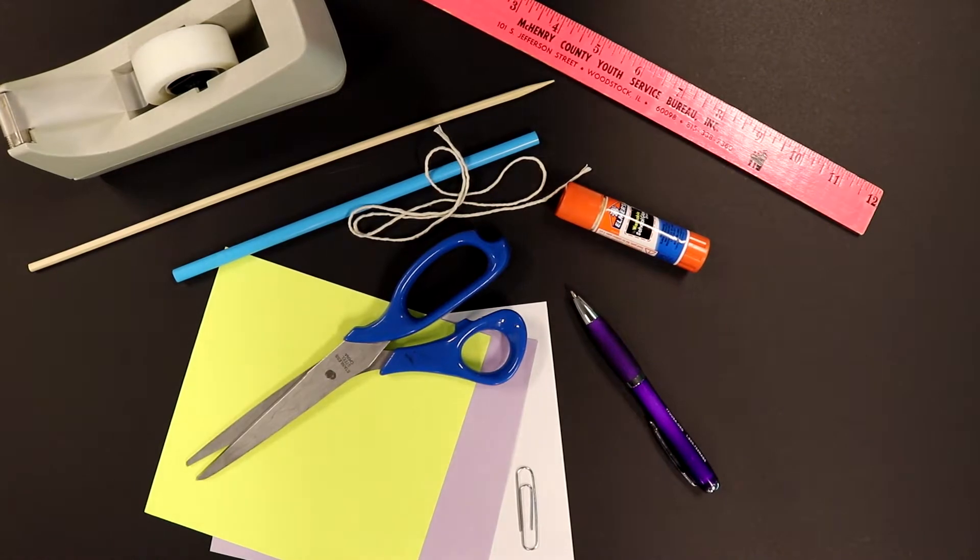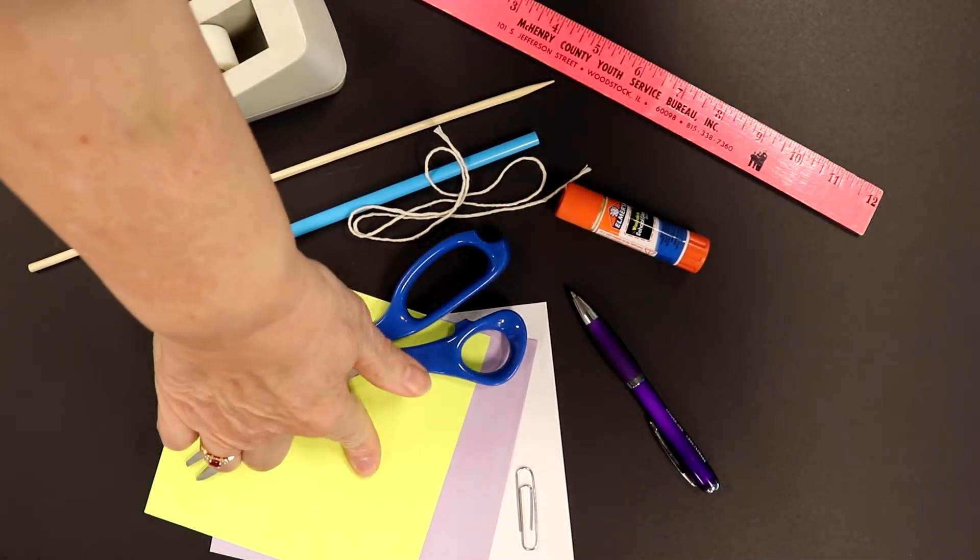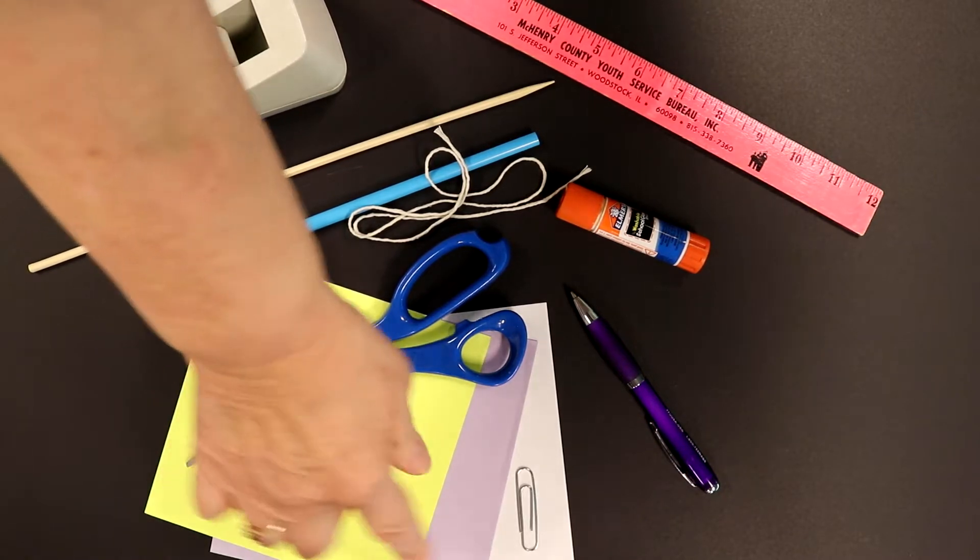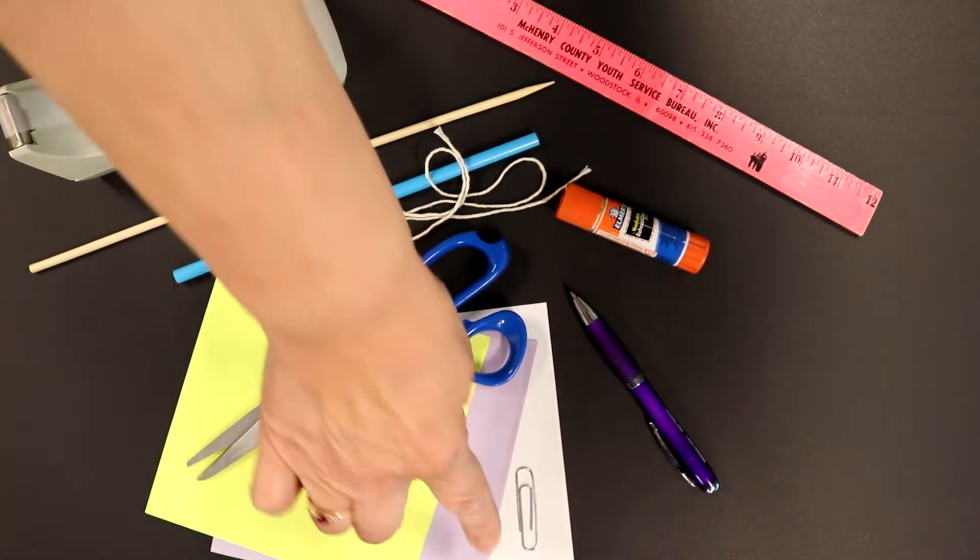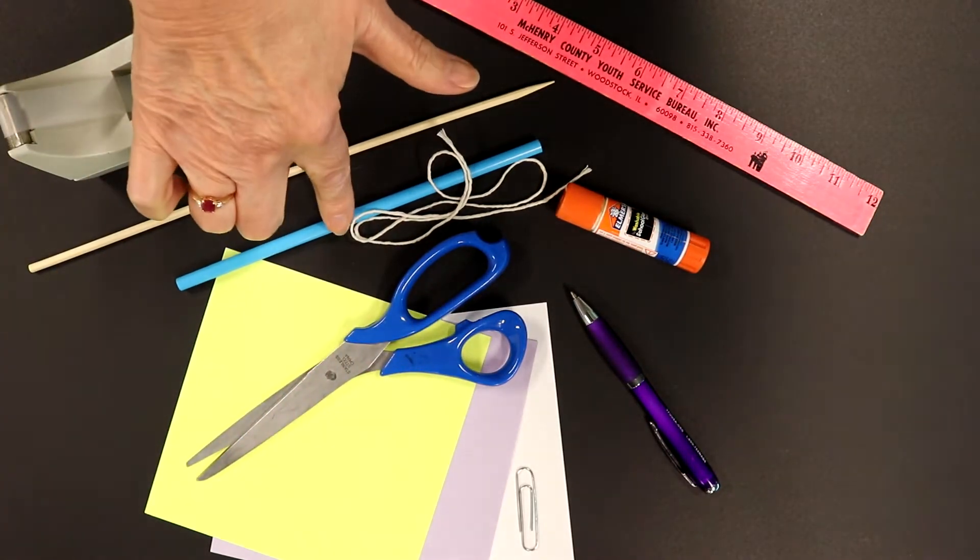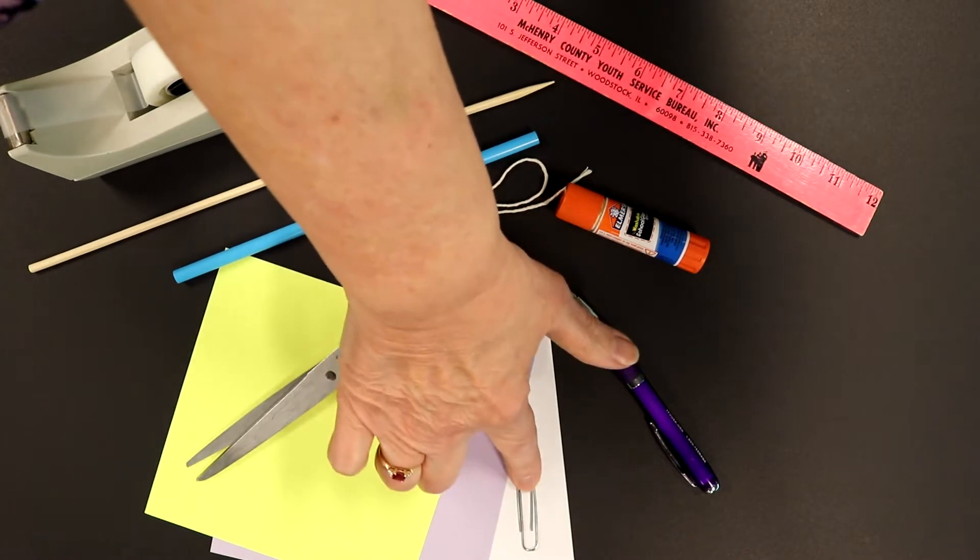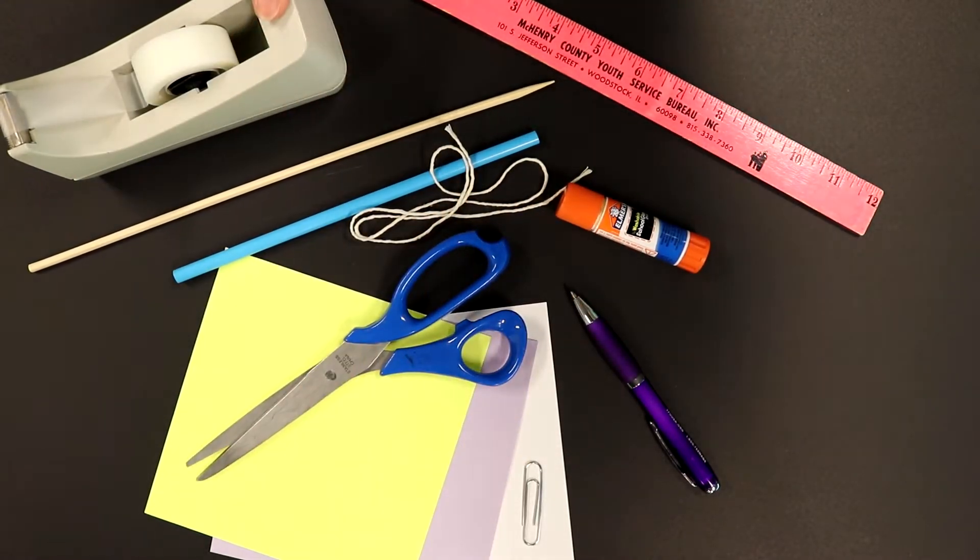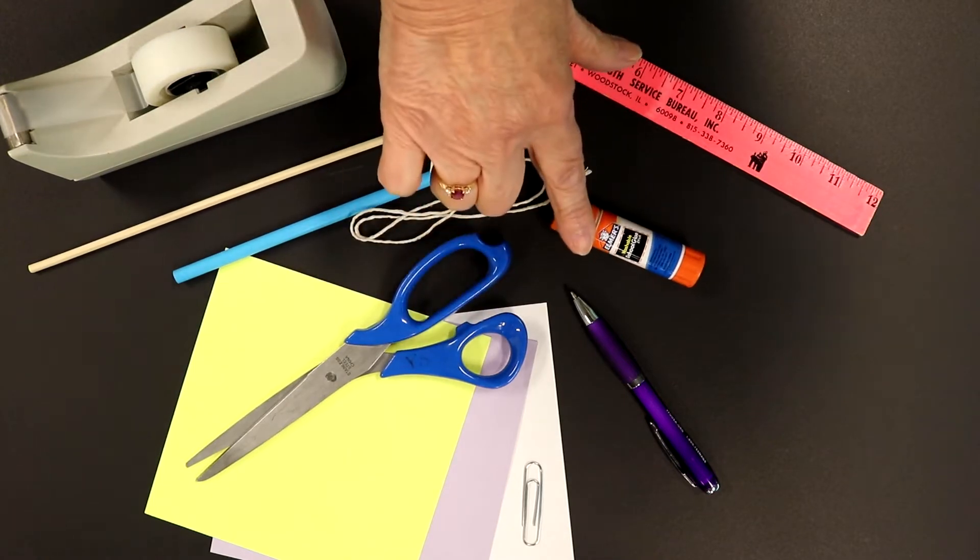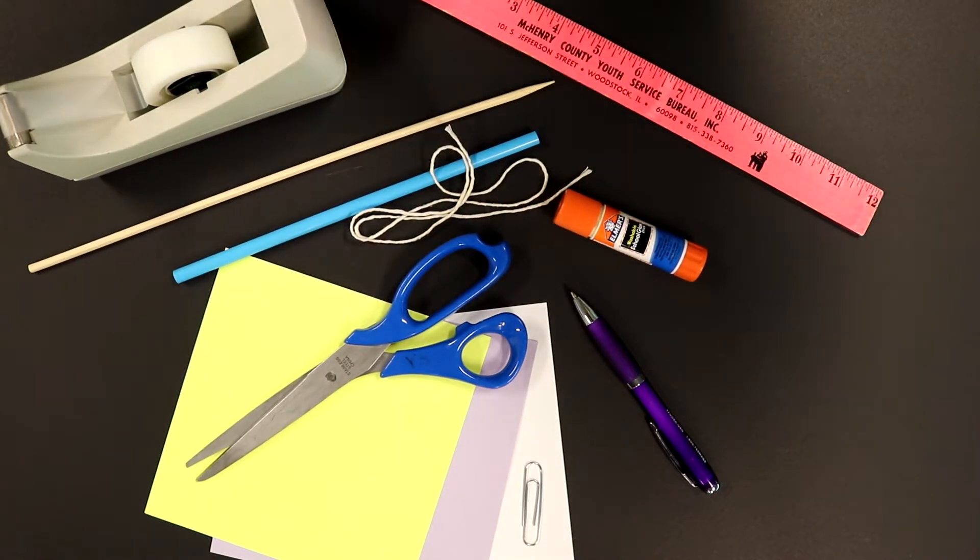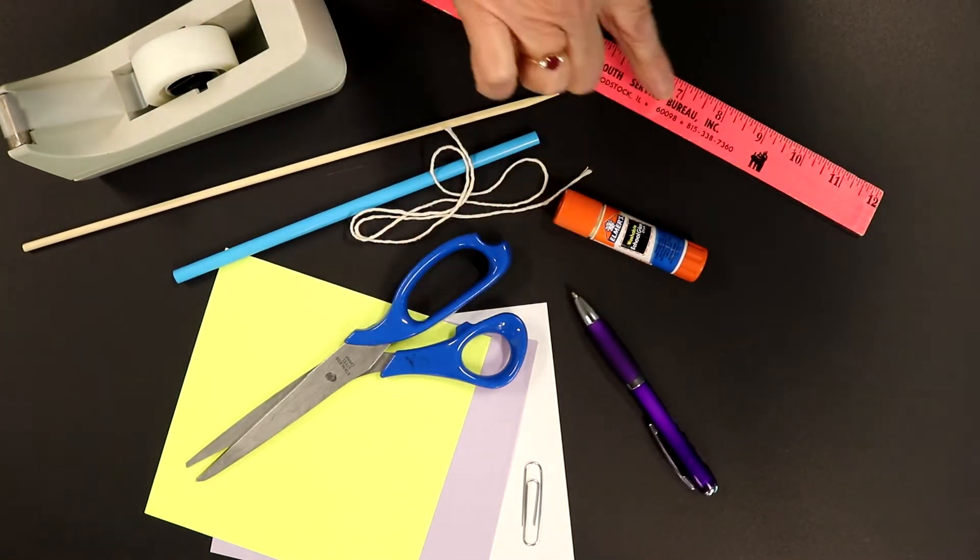To make a model windmill, this is what you need. A piece of cardstock, mine is this color. Printer paper, mine is white. And construction paper, mine is lavender. You need a large plastic straw, a string, a paper clip, tape, scissors, glue stick or glue, a wooden skewer, and a pen or pencil, and a ruler.